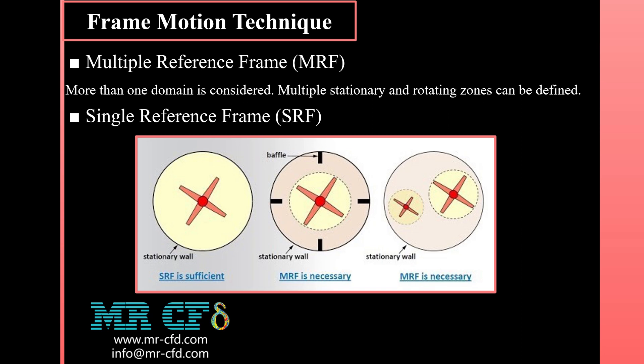The SRF submodel is the simplest and has the least computational cost, making it suitable for modeling simplified problems. The MRF submodel can simulate more complicated problems in which multiple rotating and stationary zones are present. When the entire domain is rotating, the SRF submodel is used. However, in cases where stationary objects such as baffles are present, or where there are multiple rotating or stationary zones, MRF must be used.